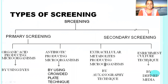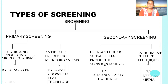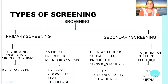In case of primary screening, there are four types of techniques: organic acid production, antibiotic production, extracellular metabolite production, and enrichment culture technique. Organic acid producing organisms can be isolated using pH indicator dyes. Antibiotic producing organisms can be primary screened using the crowded plate technique. Extracellular metabolite production can be detected by oxenography technique. Enrichment culture technique uses defined media. Secondary screening is a totally different approach that we will learn in the next lecture.